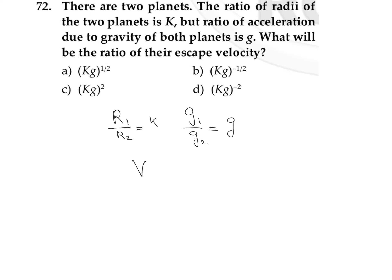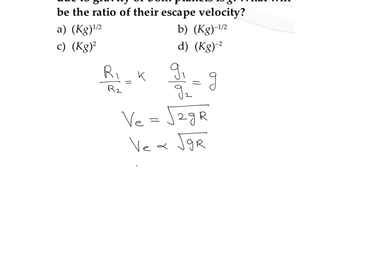I am going to find out the ratio of their escape velocity. Escape velocity can be written as the square root of two times g times r, or escape velocity is directly proportional to the square root of g times r. So we can write escape velocity in situation 1 divided by escape velocity in situation 2 is equal to the square root of (g1 divided by g2) times (r1 divided by r2).